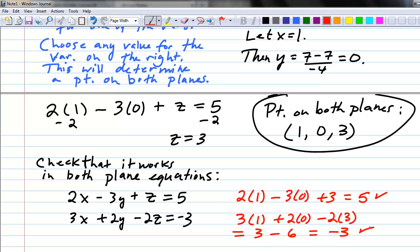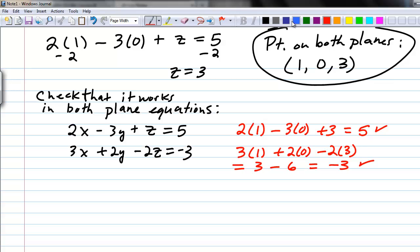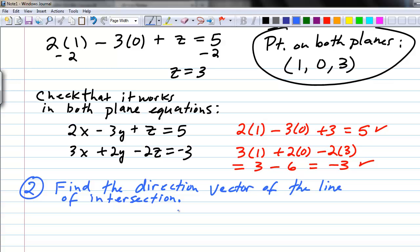The next step is to find the direction vector of this line of intersection. We've got to think about what we need to do to find this. The direction vector of the line is parallel to this line. The line happens to be in both planes, and if the line is in both planes, it must be orthogonal to or perpendicular to the normal vector of both planes.